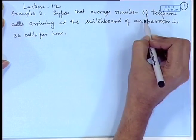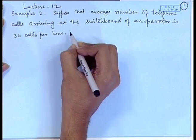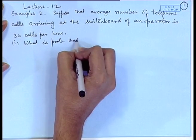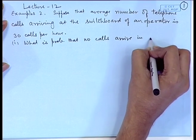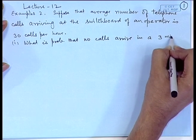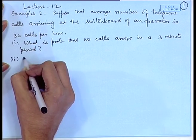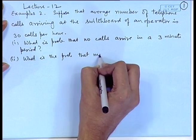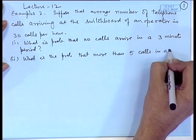Let us look at some applications of the Poisson process. Suppose that the average number of telephone calls arriving at the switchboard of an operator is 30 calls per hour. What is the probability that no calls arrive in a 3-minute period? What is the probability that more than 5 calls arrive in a 5-minute period?